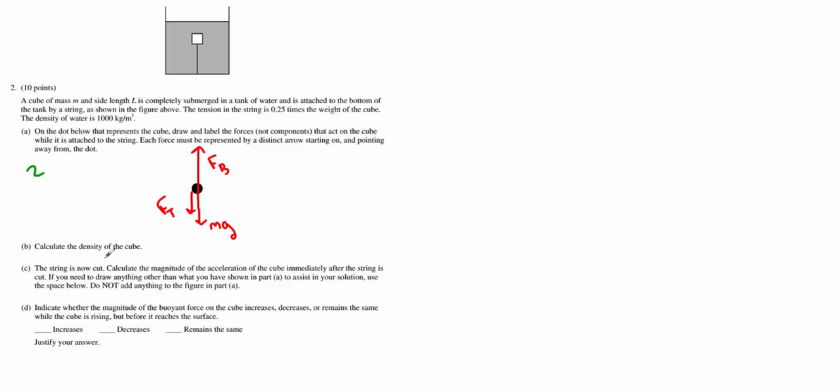Part B, we want the density of the cube. Now, a lot of students, when they try to do this, recognize that there's a few ways of finding density. We know that the density of any object is the mass of that object divided by its volume. You also know that the buoyant force acting on an object is equal to the density of the fluid it's in times its volume times g. Then there's a few other kind of in-betweeners that include density in it. A lot of kids try to use this green equation in the beginning.